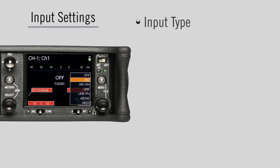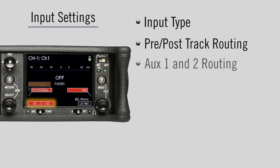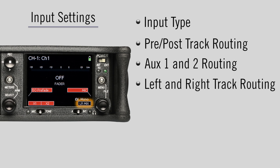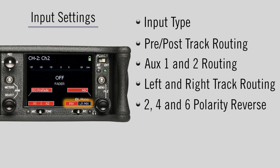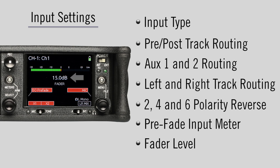Settings include input type, pre or post-fade record options, aux1 and aux2 routing, and left and right track routing. From here, the polarity of inputs 2, 4, and 6 can be reversed. Also located on this display is a meter showing the input's pre-fade level in dBu, plus a numerical value showing where the fader level is set.